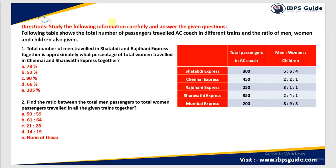The direction of the problem is: study the following information carefully and answer the given questions. The following table shows the total number of passengers traveled in AC coach in different trains. They have given us five different trains. The second column gives the total passengers in AC coach — in Satabdi's AC coach there are 300 total. The last column gives the ratio of men, women and children out of the total passengers.